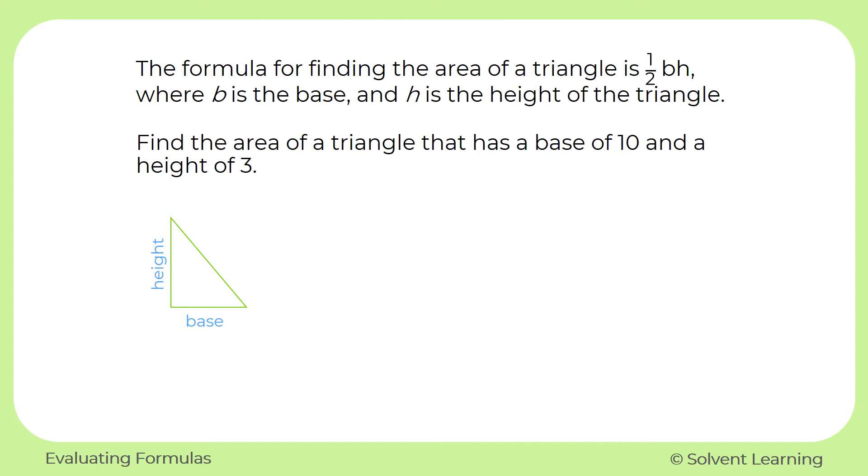First, let's look for our formula. We're told our formula is one half BH. And we know that when we have a number written next to a variable, it means they're being multiplied. It's the same thing when we have more than one variable next to each other. It means these are all being multiplied together.